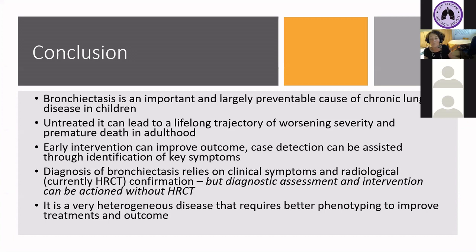In conclusion, bronchiectasis is an important and largely preventable cause of chronic lung disease in children. Untreated, it can lead to a lifelong trajectory of worsening severity and premature death in adulthood. Early intervention is key and can improve outcome. Case detection can be assisted through identification of key symptoms that need to be actioned promptly. Diagnosis relies on both clinical symptoms and radiological confirmation — currently HRCT. But remember, diagnostic assessment and intervention can be actioned without HRCT and in many cases should be. It is a very heterogeneous disease, and this requires better phenotyping to improve treatments and outcomes.